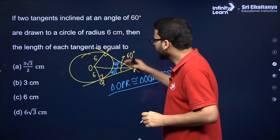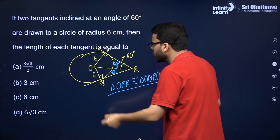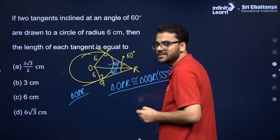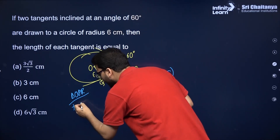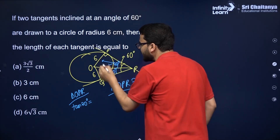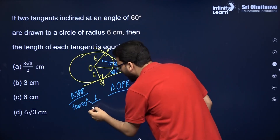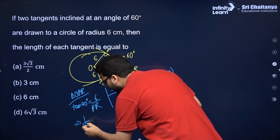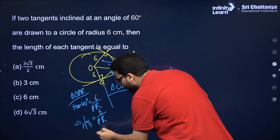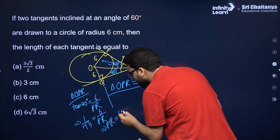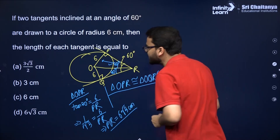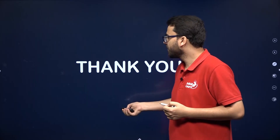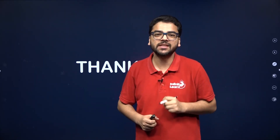We need to find PR. Using triangle OPR, tan 30 equals perpendicular over base, so tan 30 equals 6 divided by PR. Since tan 30 equals 1/√3, cross-multiplying gives PR equals 6√3 centimeters. So the length of each tangent is 6√3 centimeters. That's all we needed to do in the MCQs for the chapter Circles.